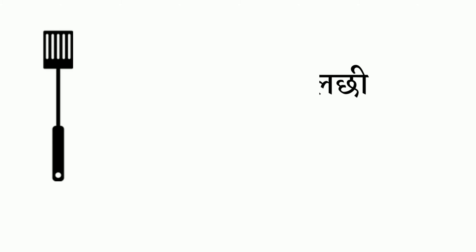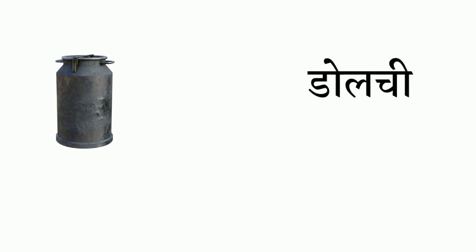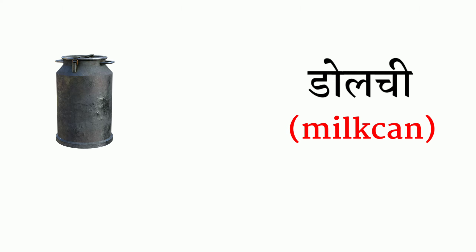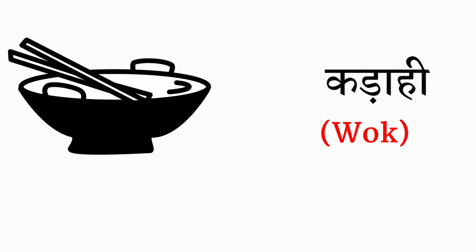Next we have kalchi — that's called skimmer. Next we have dolchi — that's called milk can. Next we have kadhai — it's called wok.